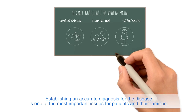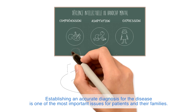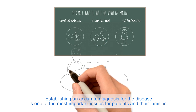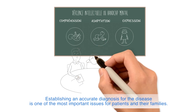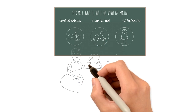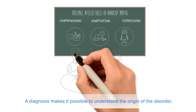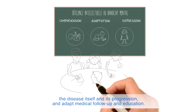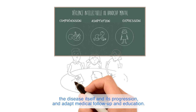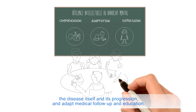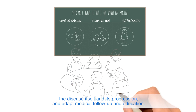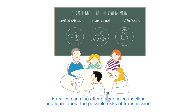Establishing an accurate diagnosis for the disease is one of the most important issues for patients and their families. A diagnosis makes it possible to understand the origin of the disorder, the disease itself, and its progression, and to adapt medical follow-up and education. Families can also attend genetic counseling and learn about the possible risks of transmission.